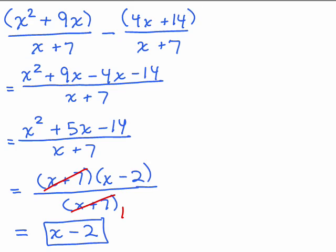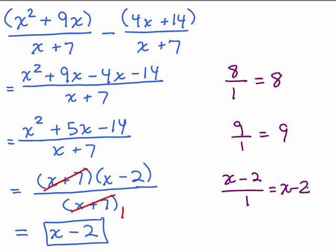Do not leave a 1 in the denominator, just like 8 over 1. 8 over 1 is not simplified, because 8 divided by 1 is 8. 9 over 1 is 9. Similarly, x minus 2 over 1 is x minus 2. So remember not to leave a 1 in the denominator. Let's go on to another example.